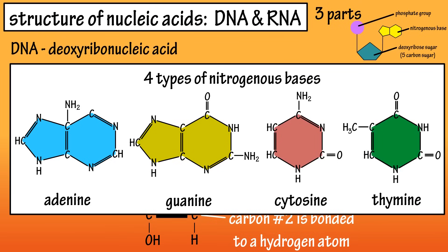As you can see, adenine and guanine have double ring structures, and cytosine and thymine have single ring structures. Adenine and guanine are called purine bases, and cytosine and thymine are called pyrimidine bases.